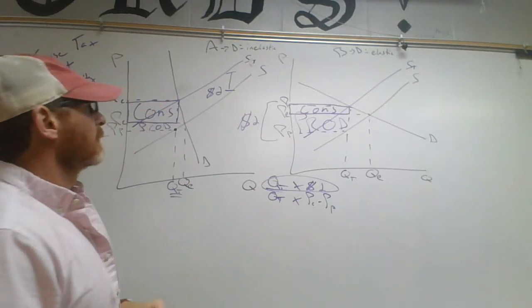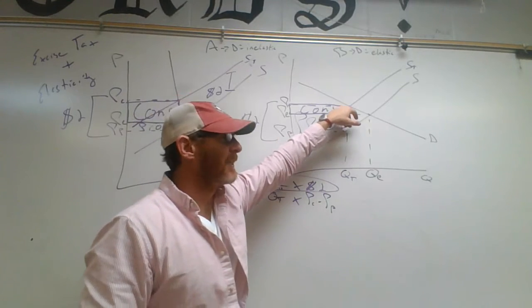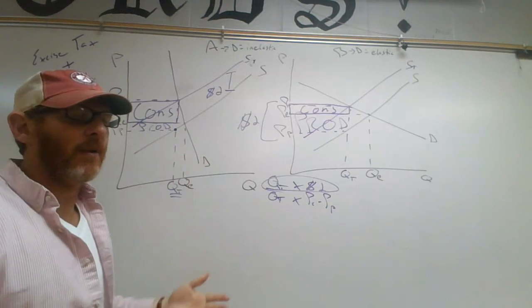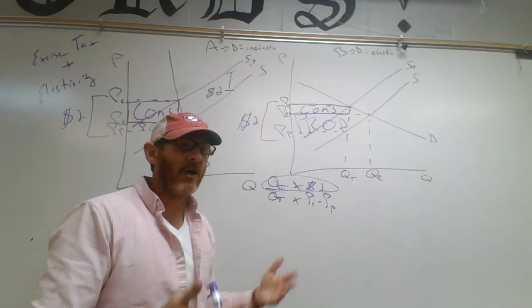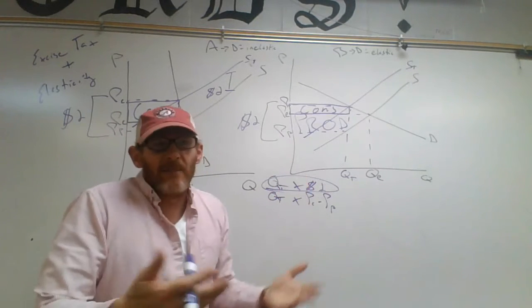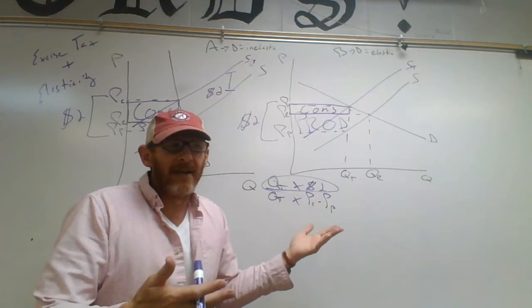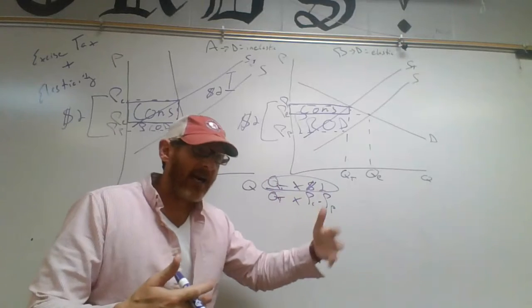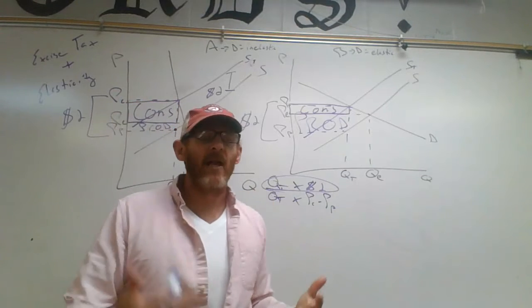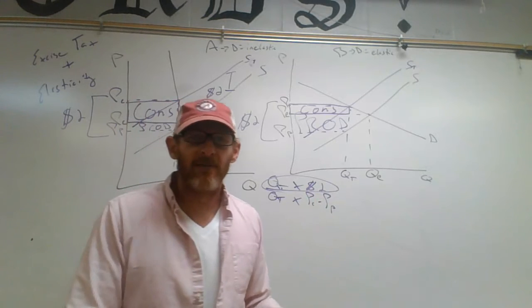The more elastic the good, the more the tax is passed on to the producer, and less to the consumer. The reason why governments put excise taxes on inelastic goods is because the producer isn't paying as much, and the consumer is paying a tax on a good that's not really helping society anyway — you're paying a tax to make up for all the negative effects on society. For example, smoking — tax dollars go to pay for people who get sick and can't afford health care.